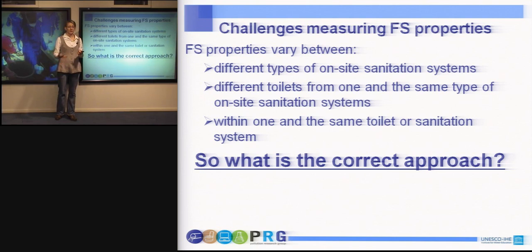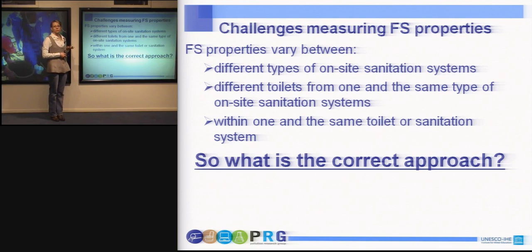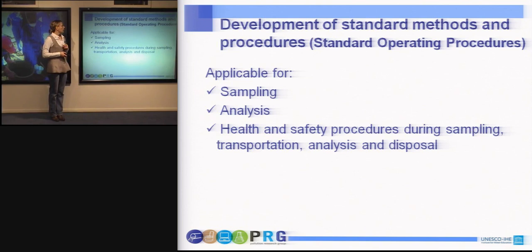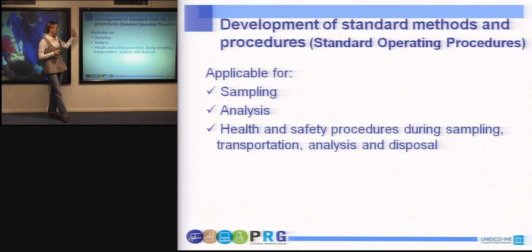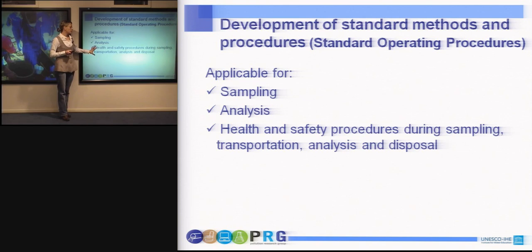At different sections of the sludge we have different degradation rates, hence different moisture content, which results in heterogeneity of sludge properties within one and the same toilet facility. The correct approach for measuring fecal sludge properties would be the development of standard methods and procedures — also called standard operating procedures — for fecal sludge analysis. They could be applicable for the sampling process, for all the different analyses, whether performed in the field or in lab conditions, and covering all health and safety procedures during sampling, transportation, storage, analysis, and disposal.